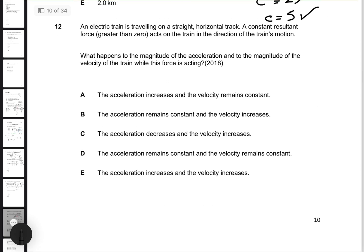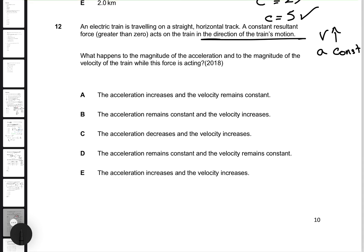Question twelve: if a force acts in the direction of the train's motion, it increases the train's velocity. Because the resultant force is constant, acceleration also remains constant. This rules out choices A, C, and E. Velocity increases, so choice B is the correct answer. A constant force maintains constant acceleration, which continuously increases velocity.